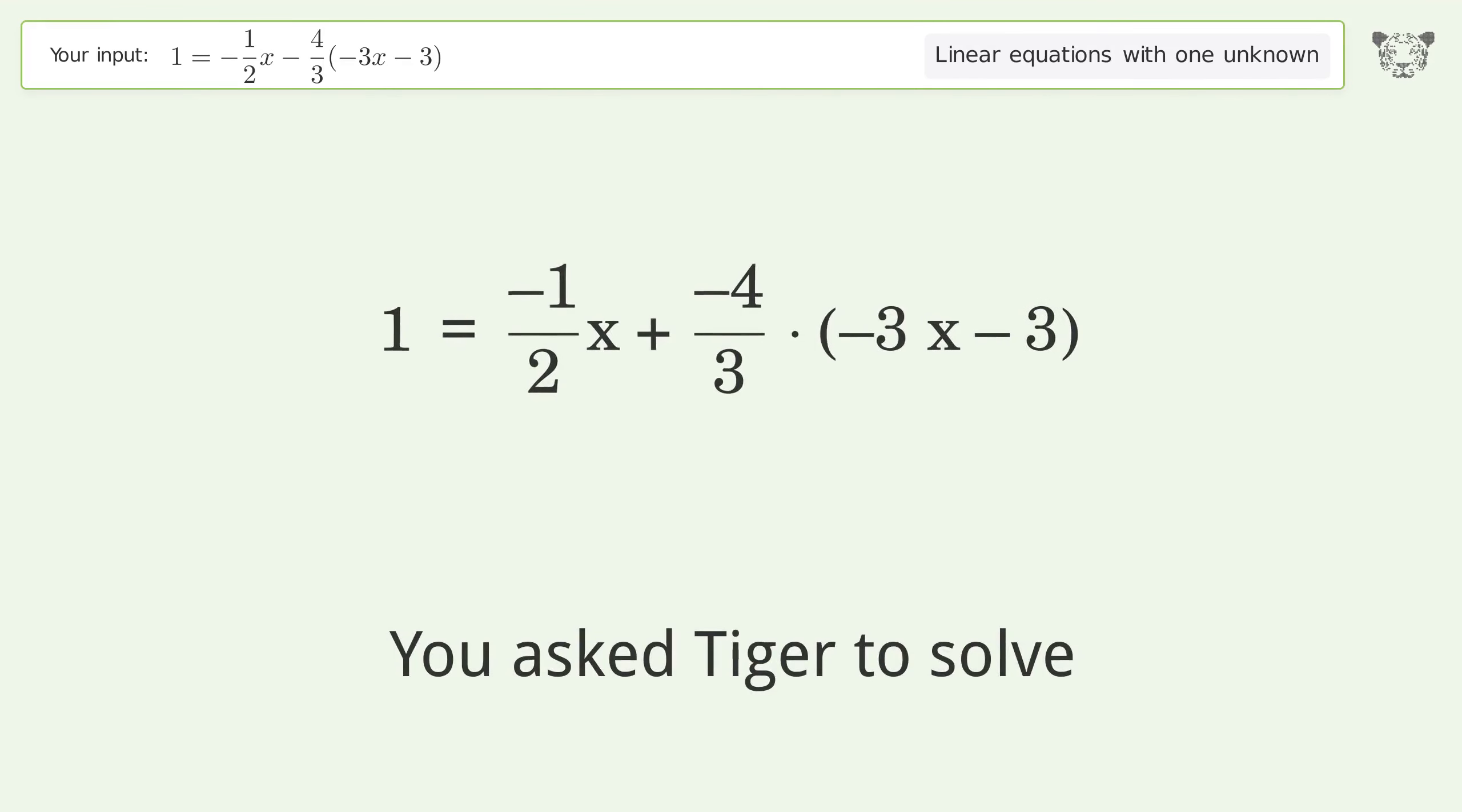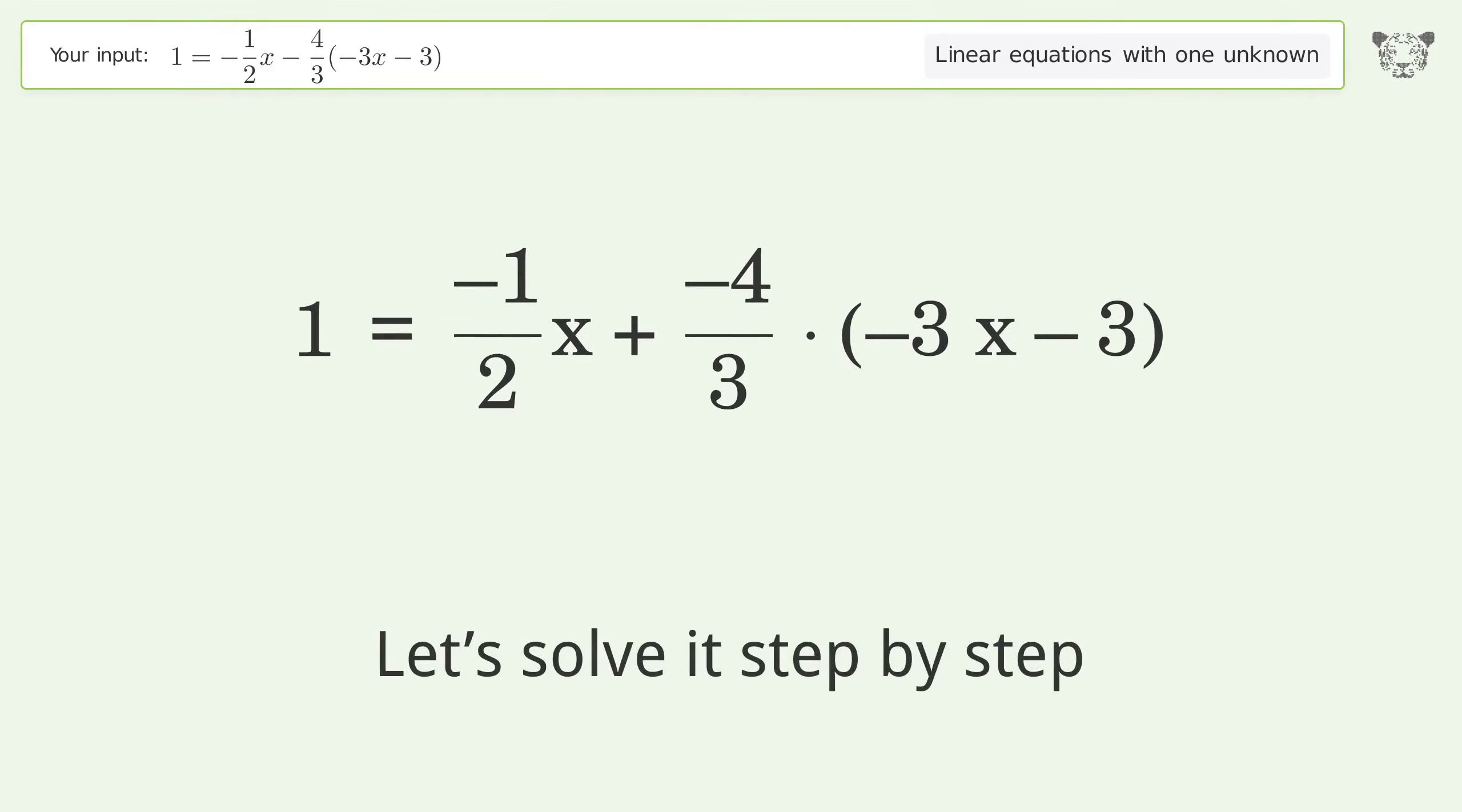You asked Tiger to solve this. It deals with linear equations with one unknown. The final result is x equals negative 6 over 7. Let's solve it step by step.